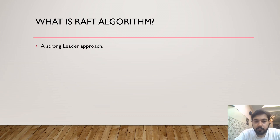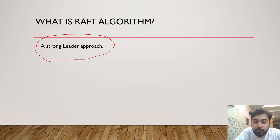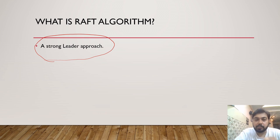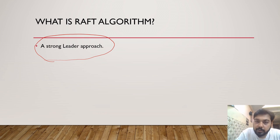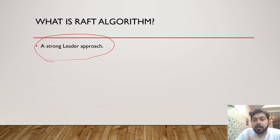The Raft algorithm comes with one strong point that is different from the earlier Paxos algorithm: a strong leader approach. They simply said we don't care what has been the log or state in other nodes — we only see what the source of truth is in the leader, and that particular source of truth is the golden source of truth. The other nodes, known as followers, might not be in sync, but the leader is the source of truth.